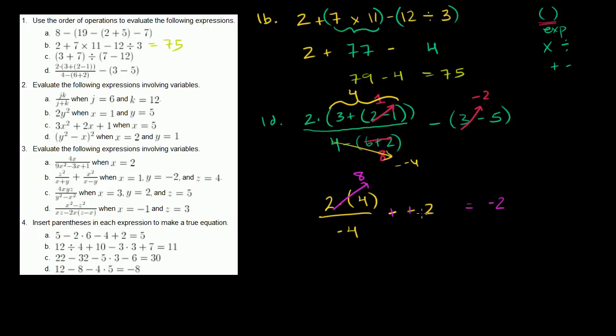So negative 2 plus 2 equals 0. This big hairy expression simplified to 0. Now let's do 2b.